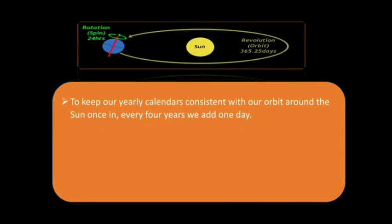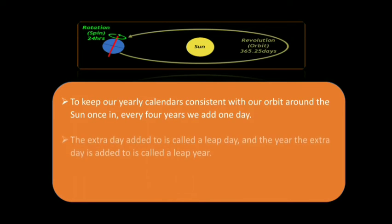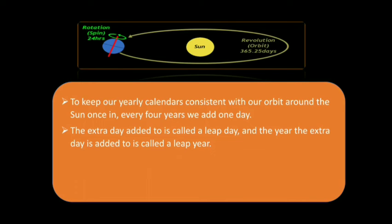To keep our yearly calendars consistent with our orbit around the Sun, once in every 4 years we add 1 day. The extra day added to is called a leap day and the year the extra day is added to is called a leap year.